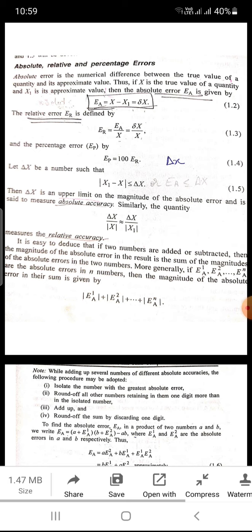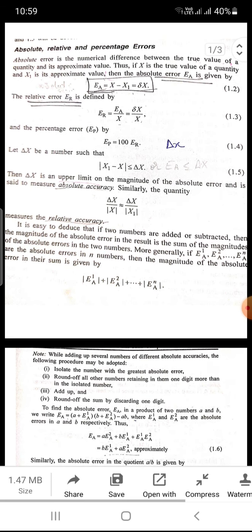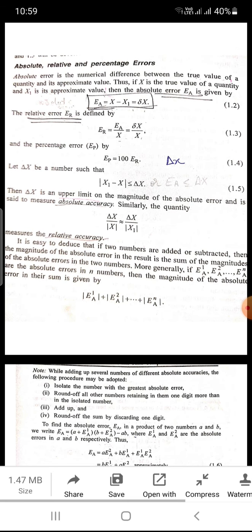Today we will be discussing absolute, relative, and percentage errors. Now what is absolute error? An absolute error is the numerical difference between the true value of a quantity and its approximate value.